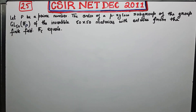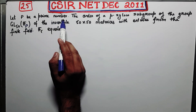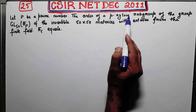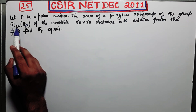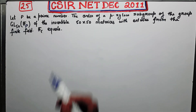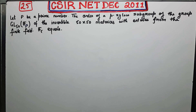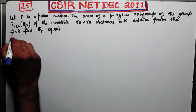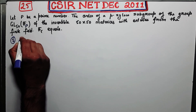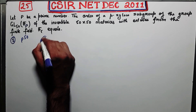Welcome back guys. I'm here with you to solve problem number 25 of CSIR Net December 2011. This question says: let P be a prime number, find the order of a P-Sylow subgroup of the group GL(50, F_P) — the invertible 50×50 matrices with entries from the finite field F_P. I forgot to mention the options, so I will write them now.